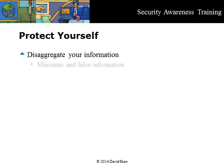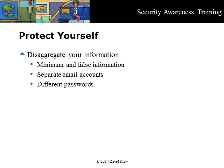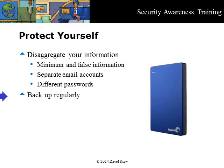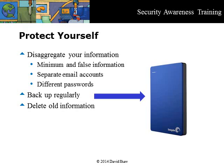Here are some more best practices. Disaggregate your information online — use different profile names and always give the minimum information required. Give false information for things like your birth date and the answers to security questions, but keep a record somewhere. Use separate email accounts for correspondence, logons to services like Facebook, and for shopping online with a credit card. You want to make it hard for snoopers to aggregate your information. For the same reason, don't give your postal code at the grocery store. Backup your computer information regularly — you can do this inexpensively with a USB drive, but keep the backup offline until you need to update it. If it's attached all the time, a virus or ransomware attack can also kill your backups.